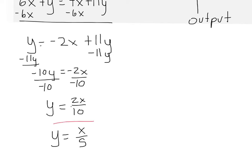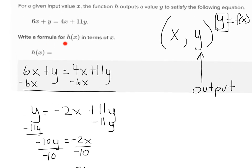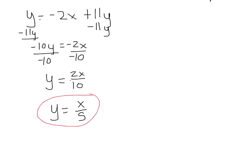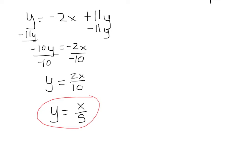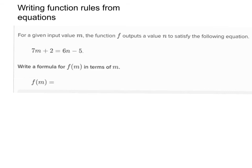So right here, this is what y equals. But they don't want me to express it in terms of y — they don't want it in terms of y. What does the question say? Write the formula for h of x in terms of x. So in the place of y, I need to put h of x. In the place of y right here, I'm going to put h of x. So h of x equals x over 5. All I did was replace the y with h of x. All right, so we're going to work this activity: writing function rules from equations.